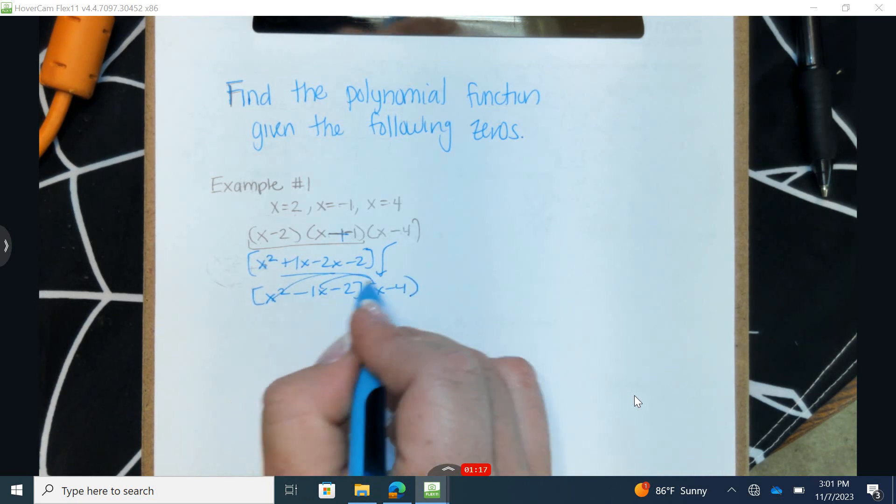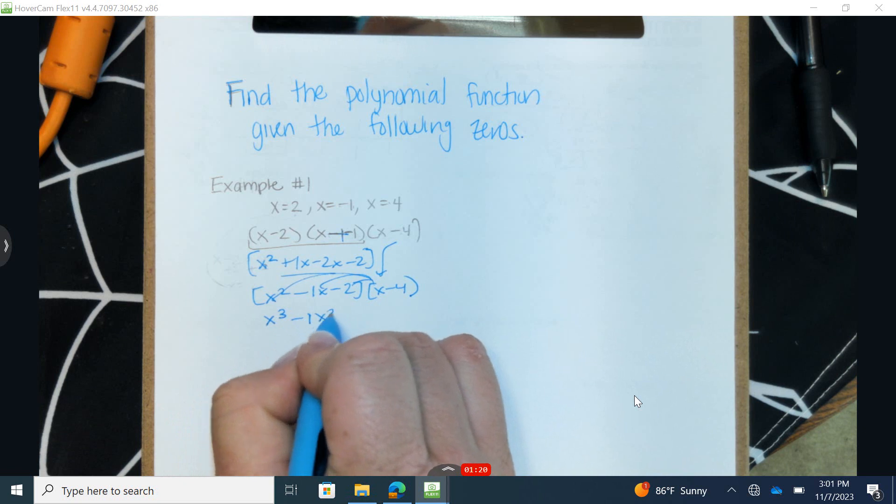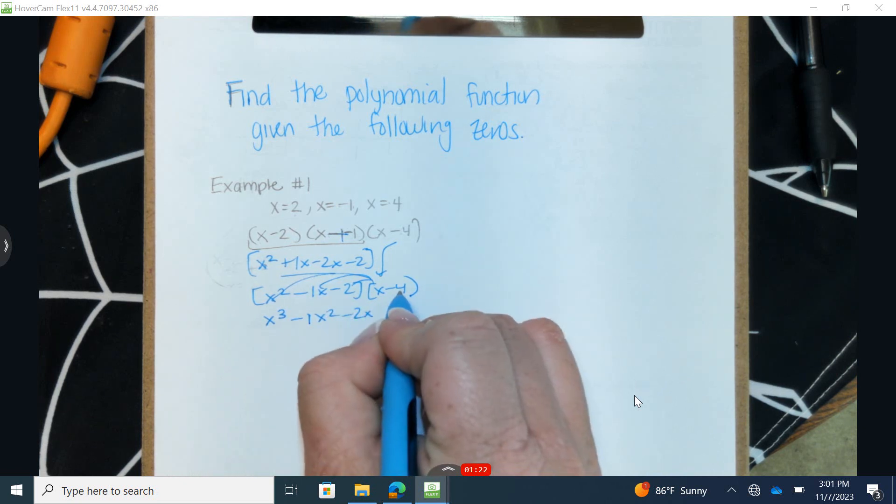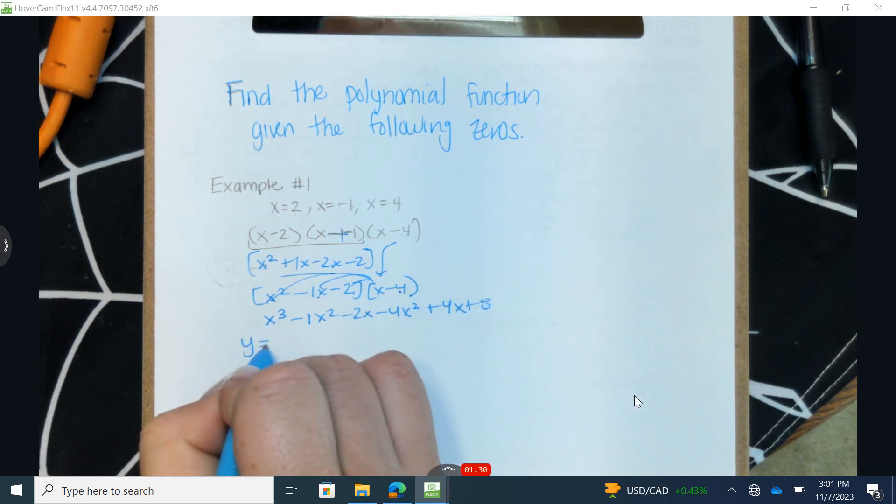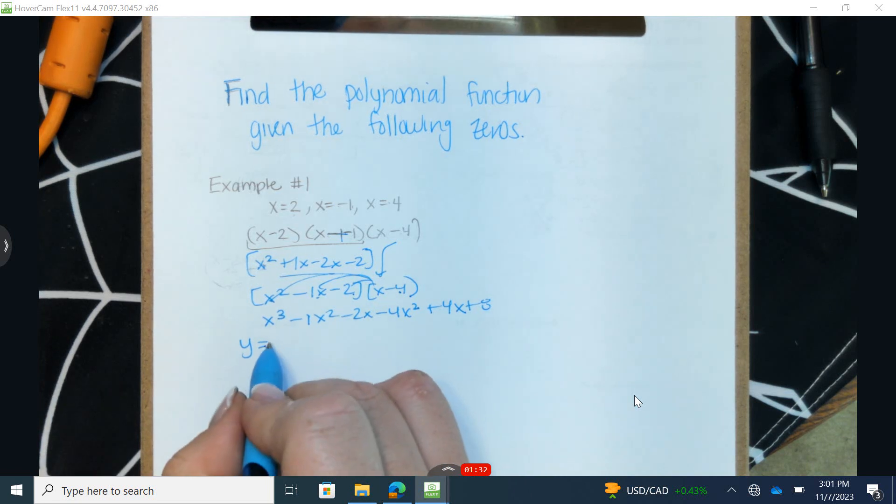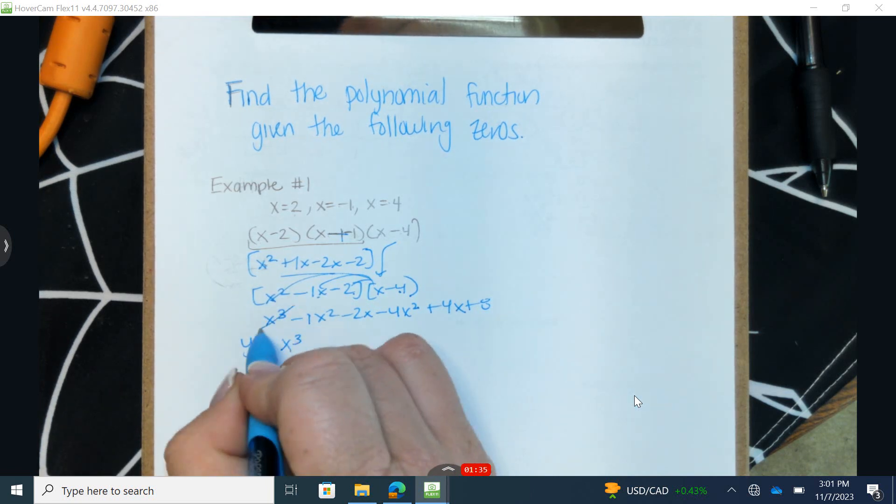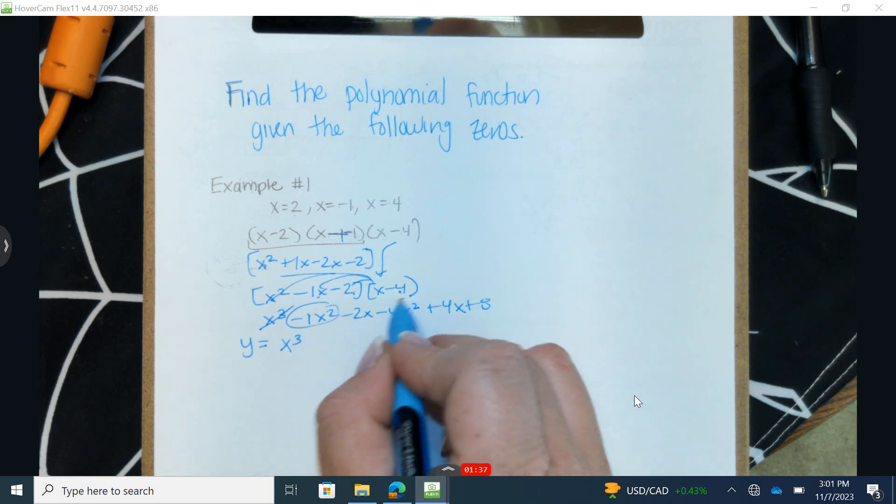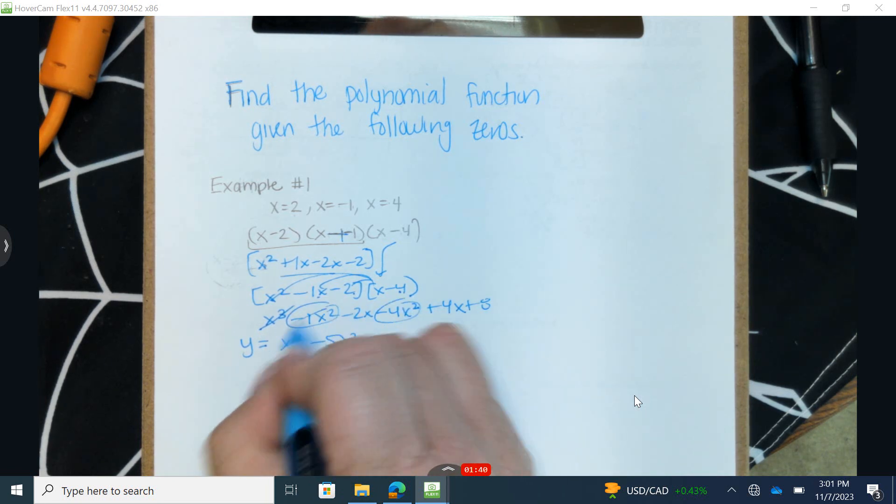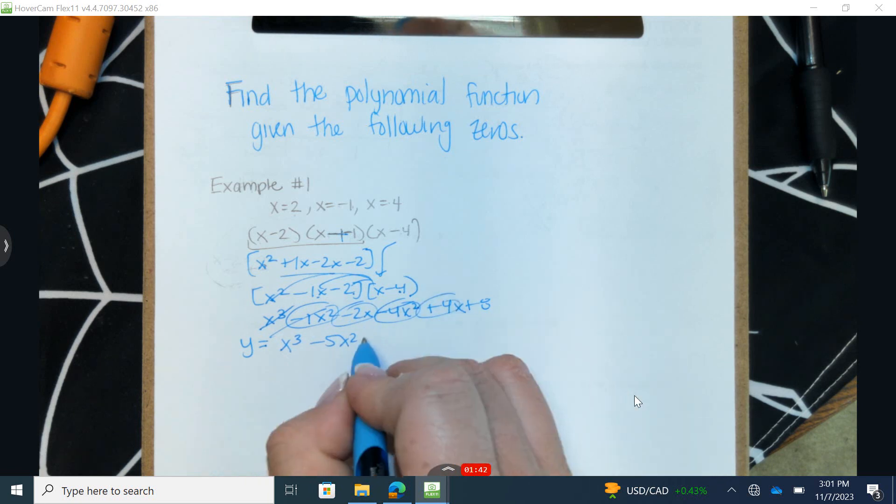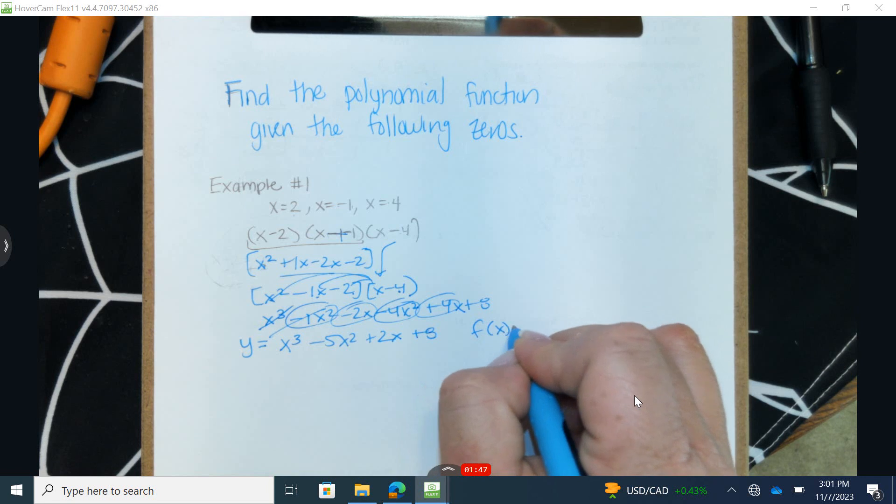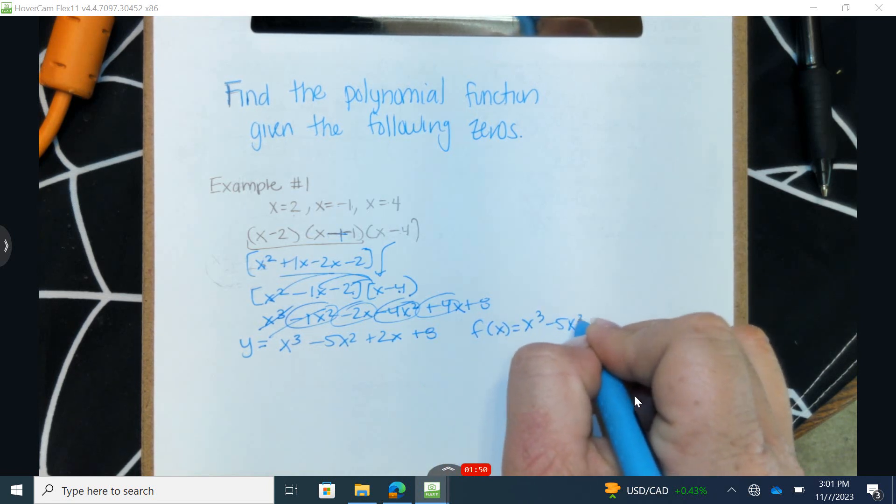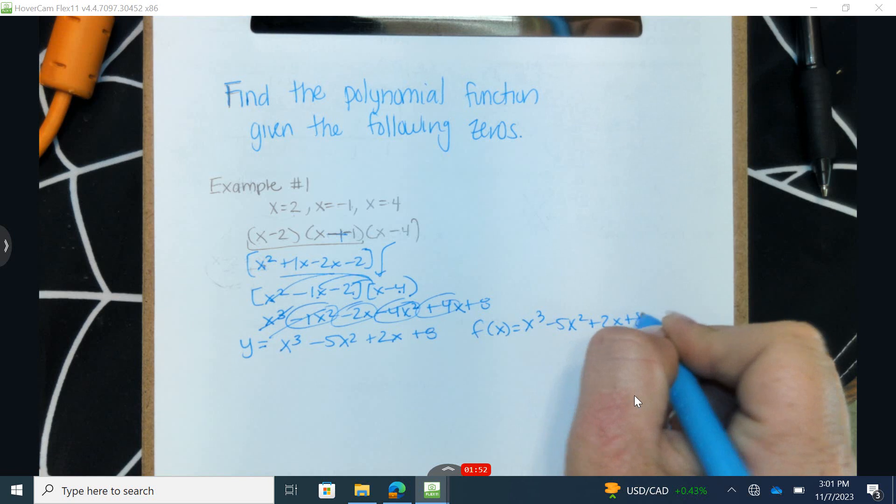I'm going to first start by distributing the x to get x cubed minus 1x squared minus 2x. Now I'm going to distribute the negative 4 to all three terms: negative 4x squared plus 4x plus 8. And then now I'm going to write this as an equation. We have y equals, combining like terms, I have negative 1 and negative 4 is negative 5x squared. I have negative 2 and positive 4 is positive 2x plus 8.